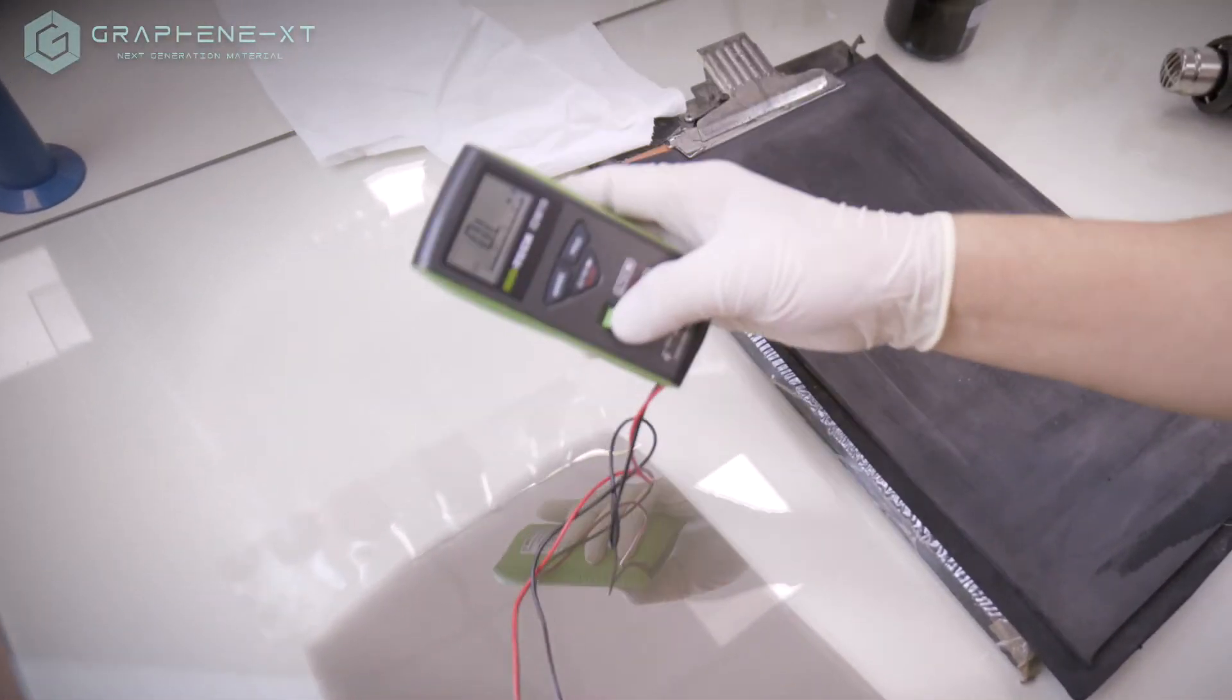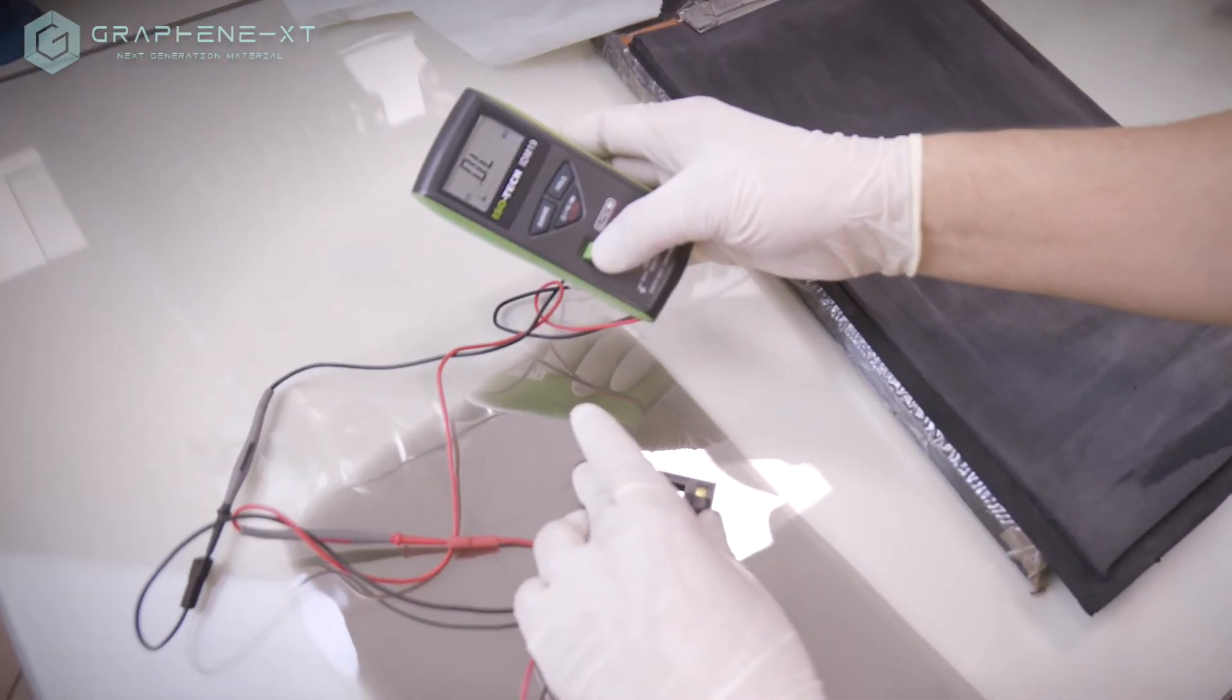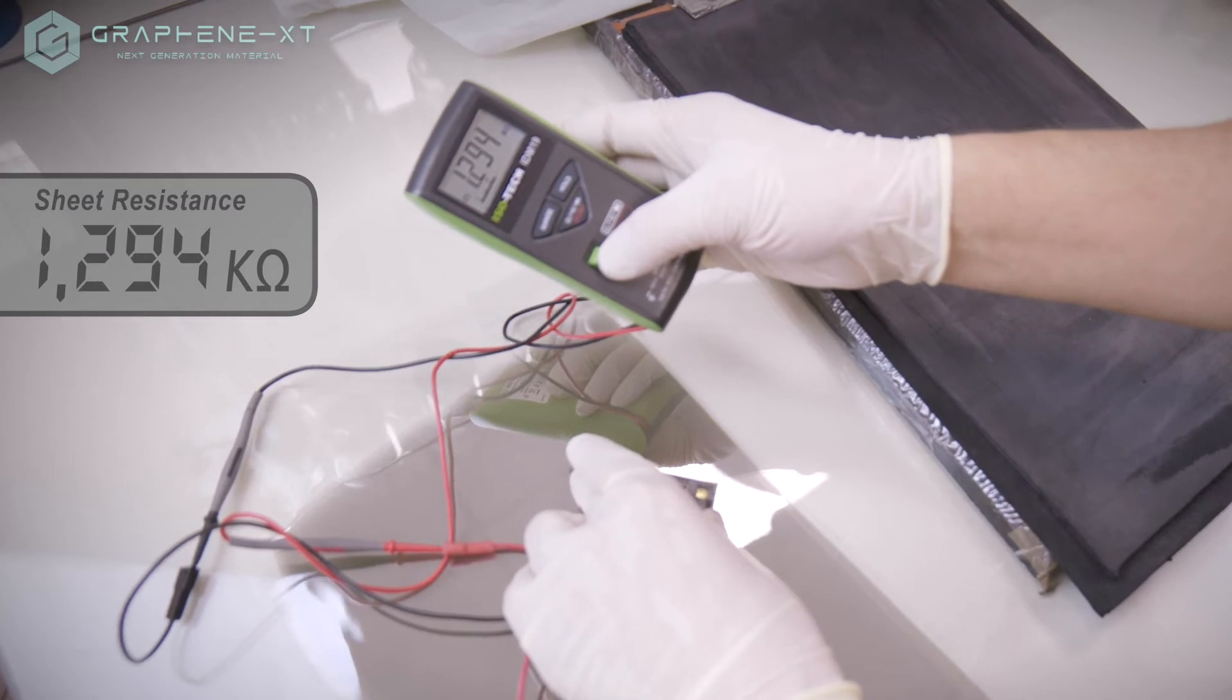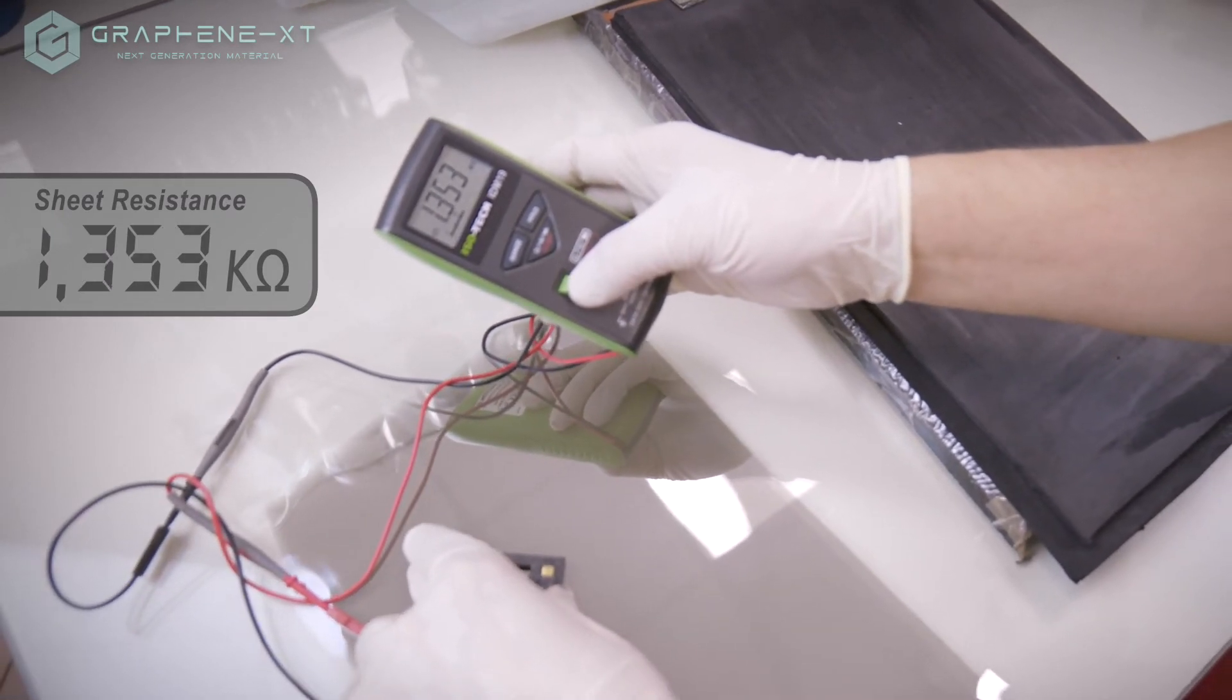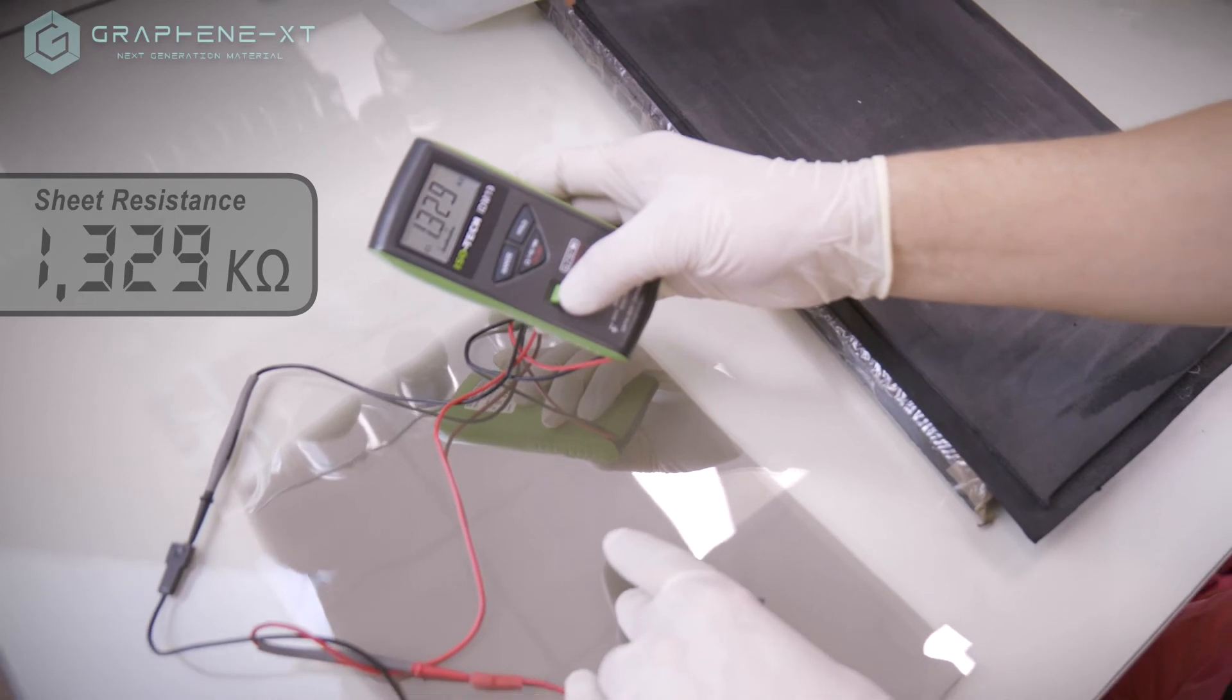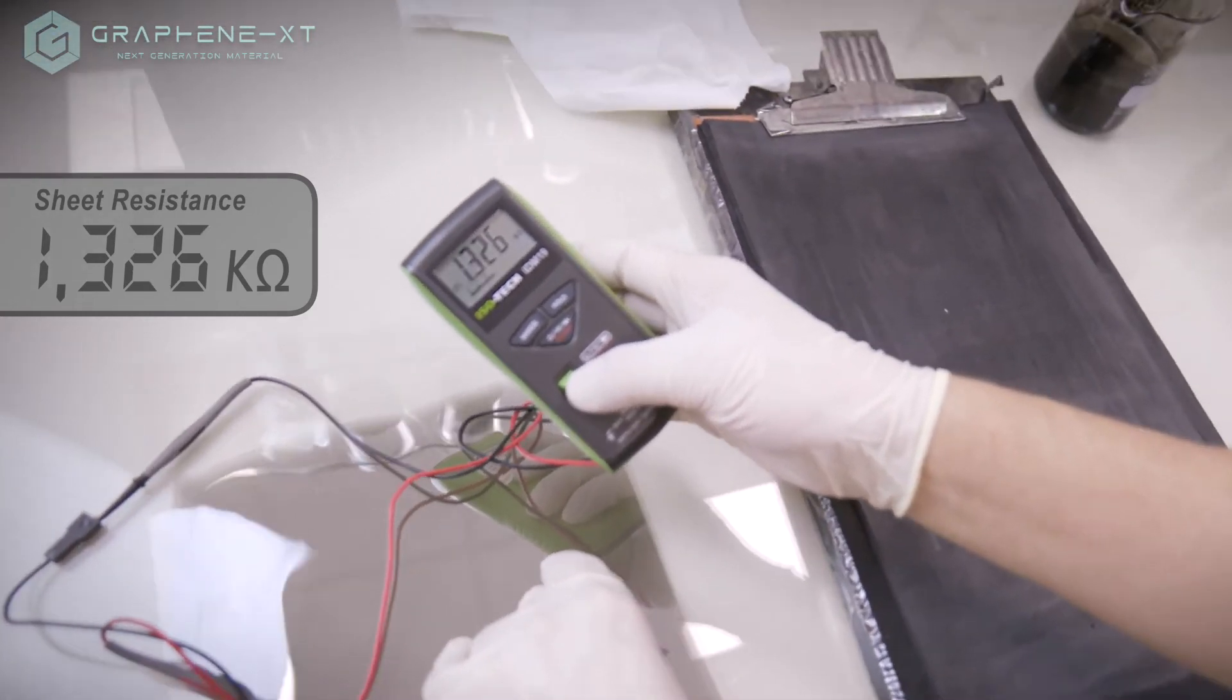You can now measure the surface resistance with a common multimeter. As we can see, this film went from insulating to 1.4 kOhm square of surface resistance.